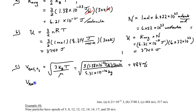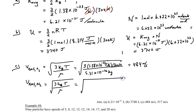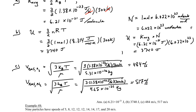Similarly, for nitrogen (N₂), using the same formula with the nitrogen molecular mass of 4.65 × 10⁻²⁶ kg gives a final RMS velocity of 517 m/s. This is one way to solve it if you know the mass of a single molecule.